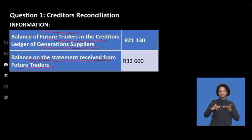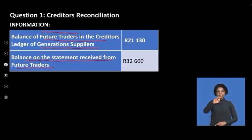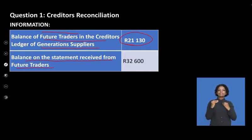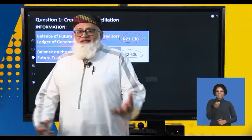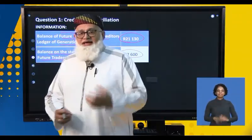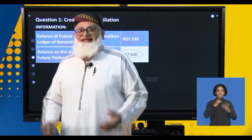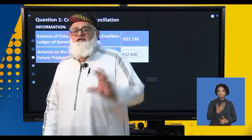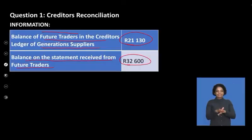Why the reconciliation? According to our ledger account, we owe them 21,130. But in terms of the statement we're receiving from Future Traders, they're telling us we owe them 32,600. Because of a whole host of reasons, the two are not the same. We have to reconcile and see why these two figures are different. That's the objective and purpose of the creditor's reconciliation statement — it's an external one, reconciling the ledger account with the statement of 32,600.